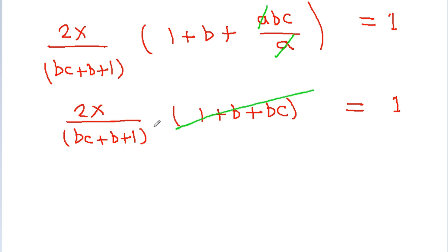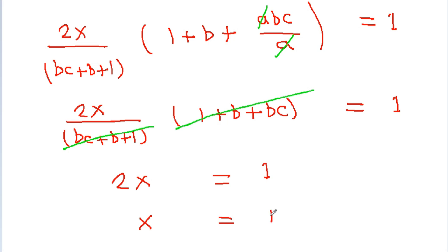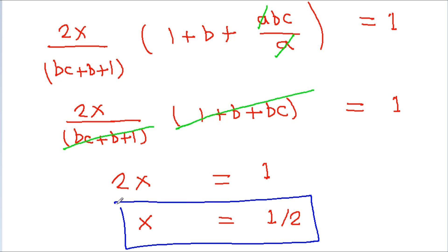Now bc + b + 1 and bc + b + 1 cancel, leaving 2x equals 1, so x is equal to 1/2.